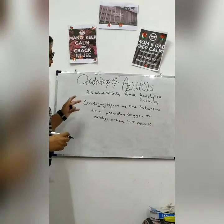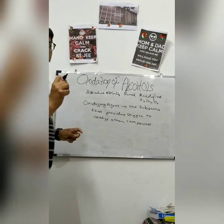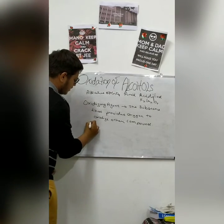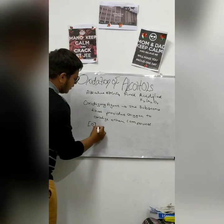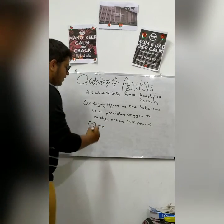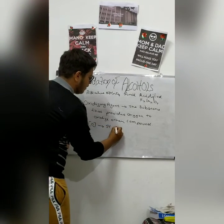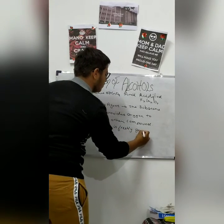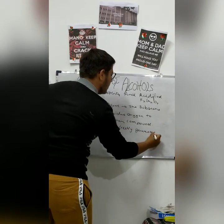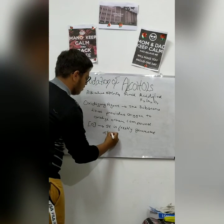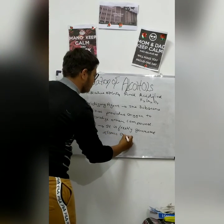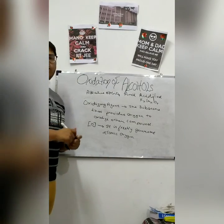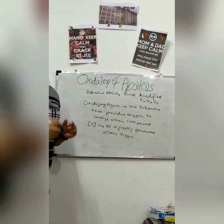We have studied that nascent oxygen is used in this reaction. What is nascent oxygen? Nascent oxygen, symbolized as [O], is freshly generated atomic oxygen. This is all about the oxidation of alcohol. If you have any doubt, do comment below and I will reply to you.